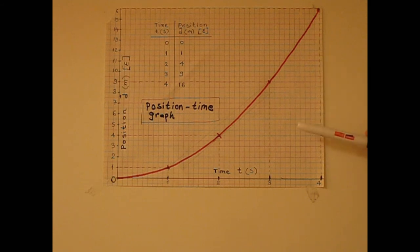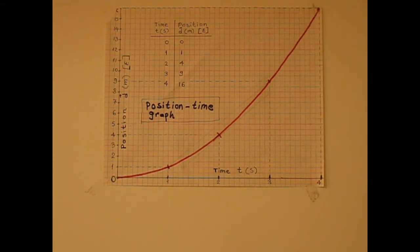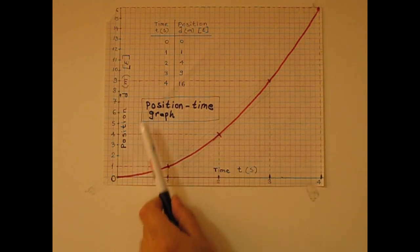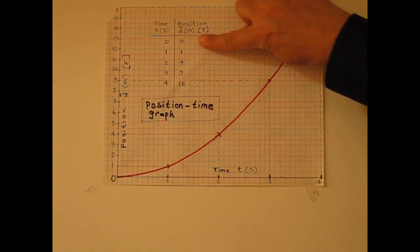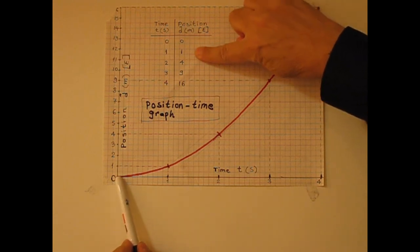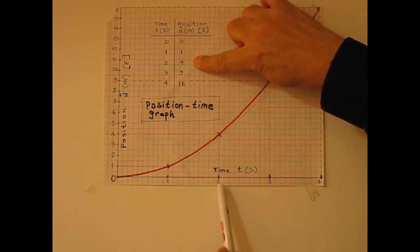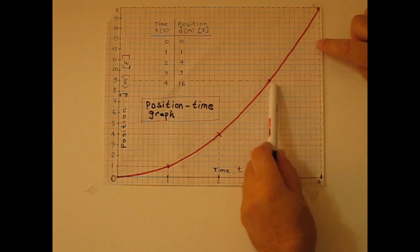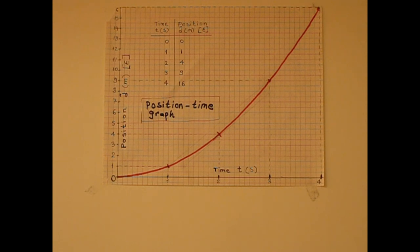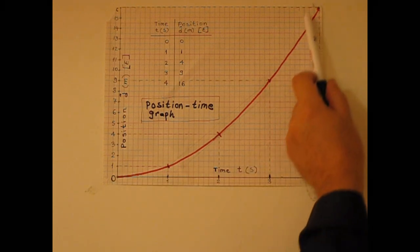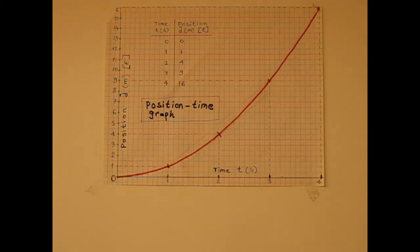From the position-time table, we create the position-time graph. Horizontal axis is time in seconds — one, two, three, four — and the vertical axis is position in meters east. We plot the points: (0,0), (1,1), (2,4), (3,9), and (4,16). When we join those points, we get the position-time graph. This graph is a curve — a parabola — representing uniformly accelerated motion.